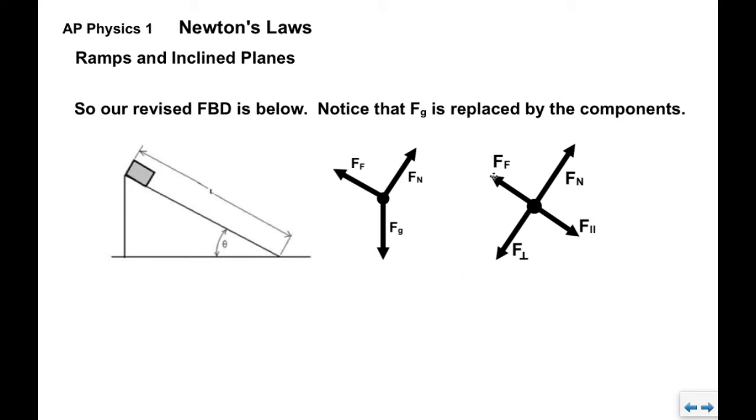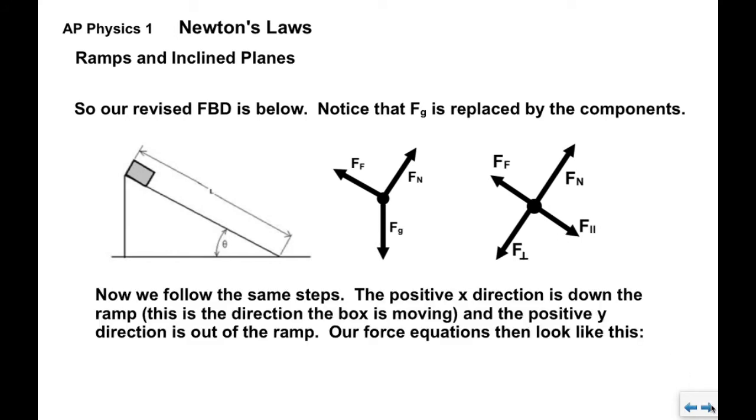So here's our revised free body diagram. Notice that FG goes away and it's replaced by its components F parallel and F perpendicular. We still have FN, we still have FF. And now we're going to follow the same steps we're used to. The positive x-direction is going to be down the ramp, that's the way the box is moving. And the positive y-direction is out of the ramp.